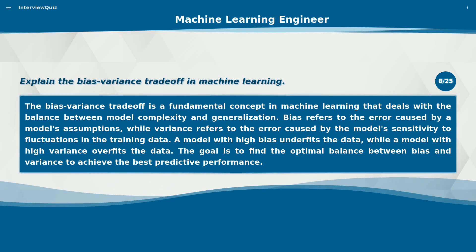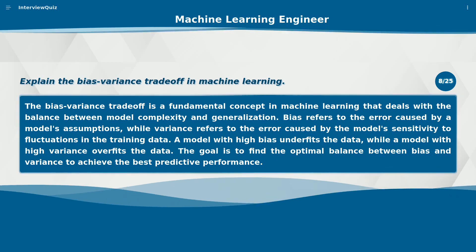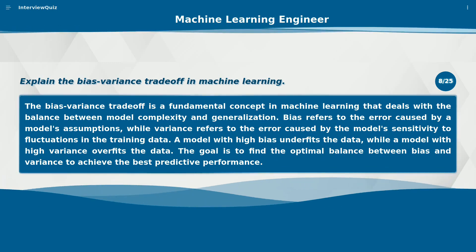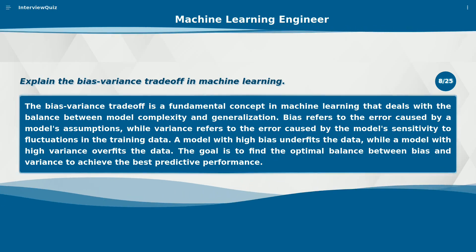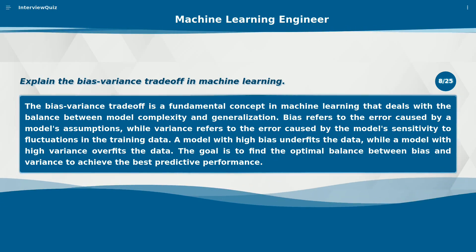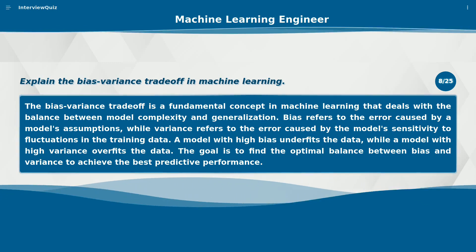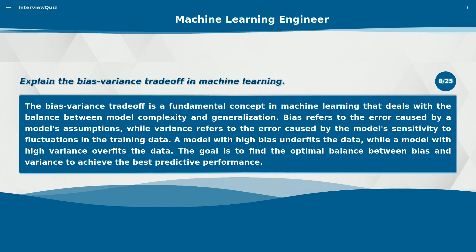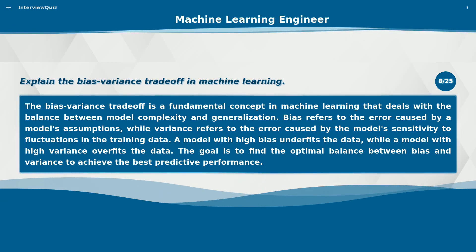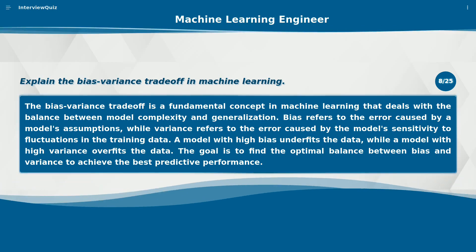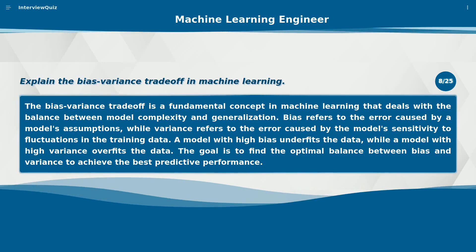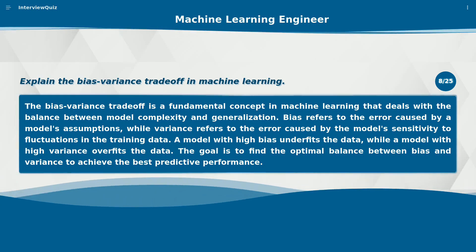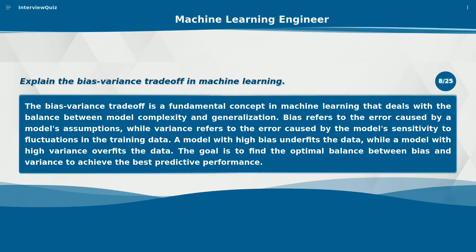Explain the bias-variance trade-off in machine learning. The bias-variance trade-off is a fundamental concept in machine learning that deals with the balance between model complexity and generalization. Bias refers to the error caused by a model's assumptions, while variance refers to the error caused by the model's sensitivity to fluctuations in the training data. A model with high bias underfits the data, while a model with high variance overfits the data. The goal is to find the optimal balance between bias and variance to achieve the best predictive performance.